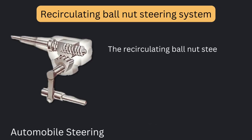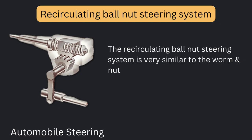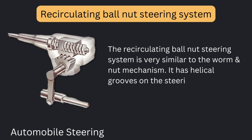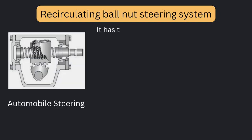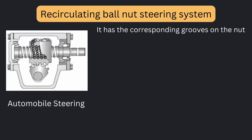The recirculating ball nut steering system is very similar to the worm and nut mechanism. It has helical grooves on the steering gear or worm, and corresponding grooves on the nut.